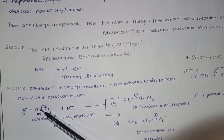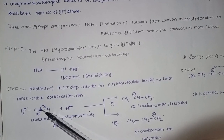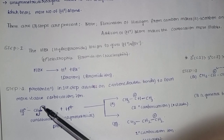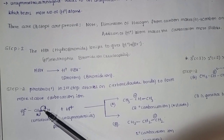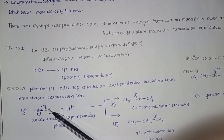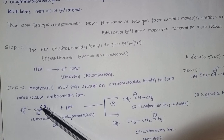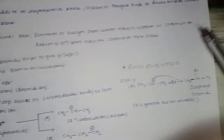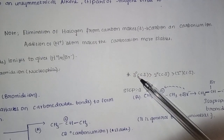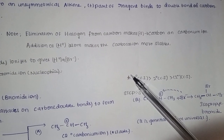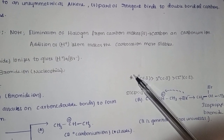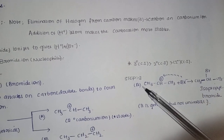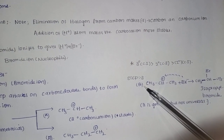This double bond in propene has CH2 and CH3 groups on either side. The carbocation at the secondary position is more stable, while the primary position gives a less stable carbocation. Secondary is even more stable than primary. Now, moving to the third step, there are two products — A and B.